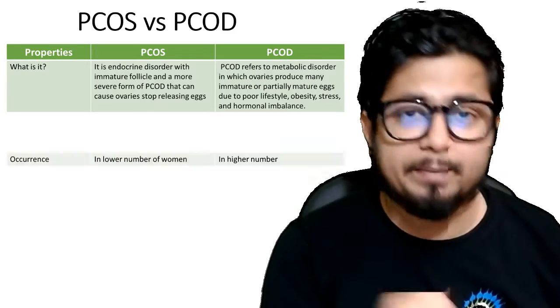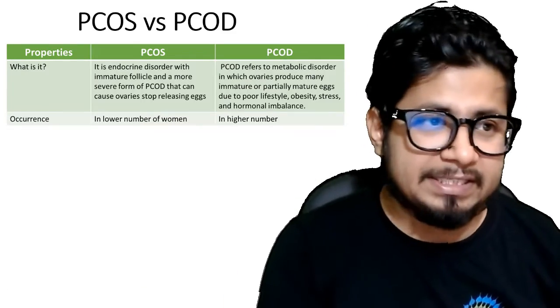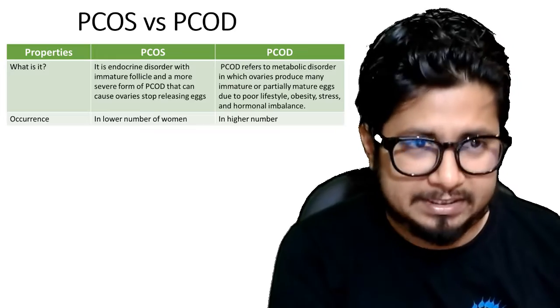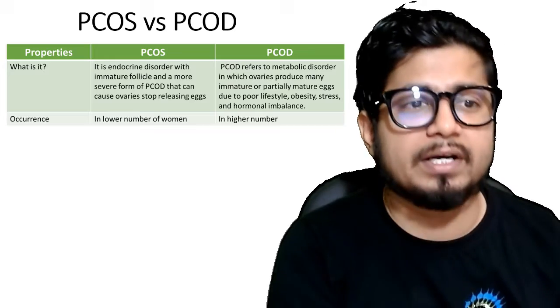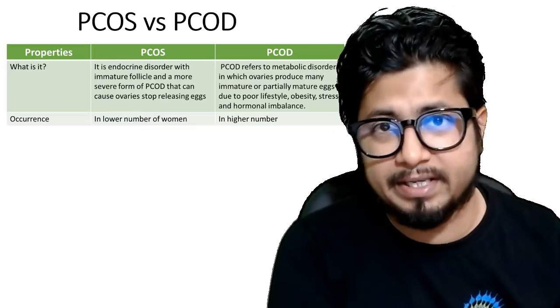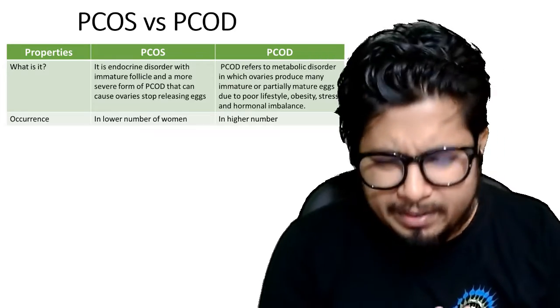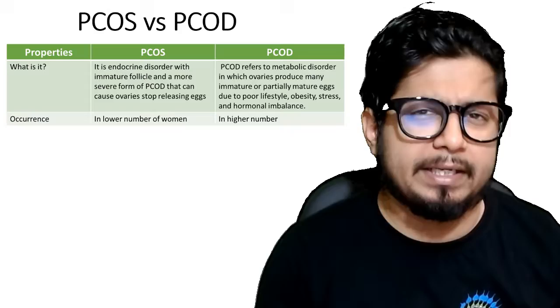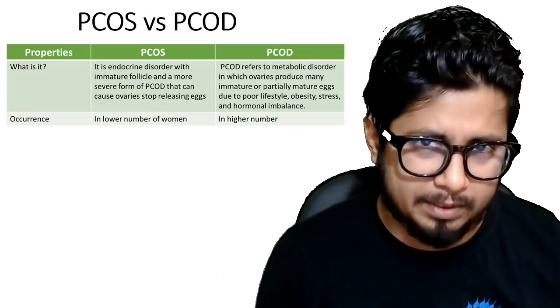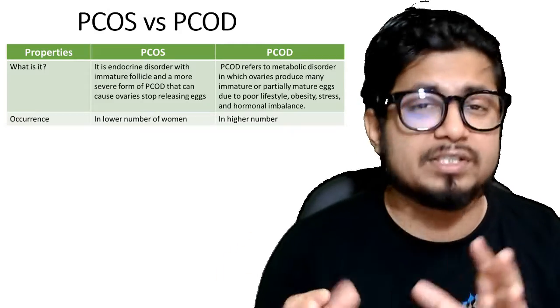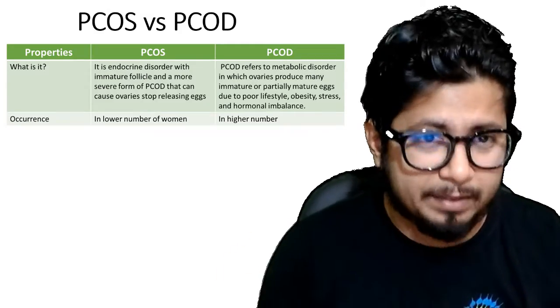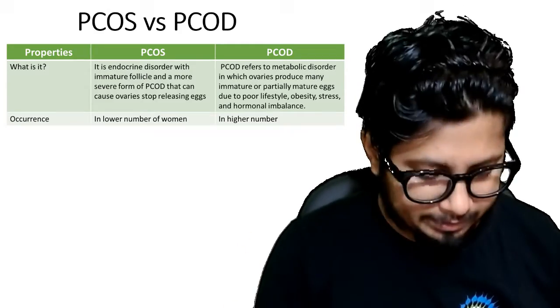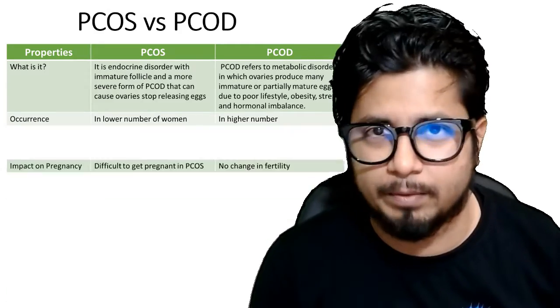The second important difference is occurrence. PCOS occurs in a lower number of women, while PCOD occurs predominantly in much higher numbers — although it is less severe, it occurs more commonly in women.